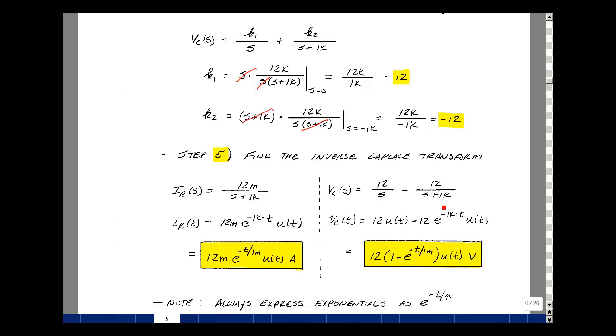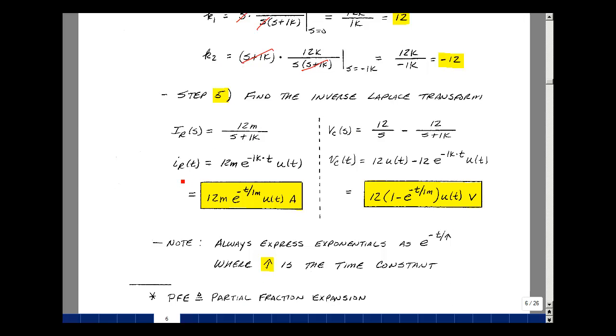Here we've got a root at minus 1k, so we have e to the minus alpha times t, times u of t, and then times 12. Could pull out a common 12 here. I have 1 minus e to the minus t over tau, writing this 1k as 1 over 1k, times u of t. Should note here that the value of i sub r and v sub c of t were exactly the same values we found in ECE 201 in Chapter 7 on pages 5 to 6.